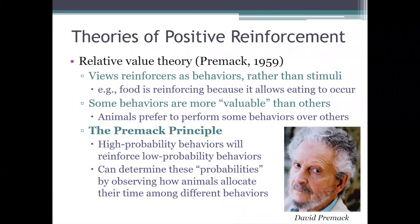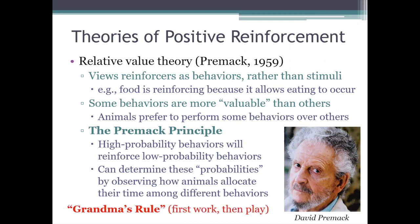Anyway, that's the idea: more probable behaviors can reinforce less probable behaviors. As long as you know how frequently an animal prefers to perform certain behaviors, you can strengthen the less frequent ones with the more frequent ones. If an animal has to perform a less preferred behavior first before it can perform a more preferred behavior, that first behavior is going to increase in frequency. Some people call this grandma's rule — first work, then play. You do that less preferred activity first, and then you get access to the more preferred activity.